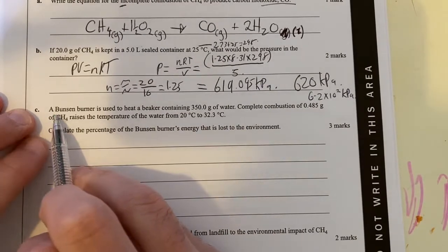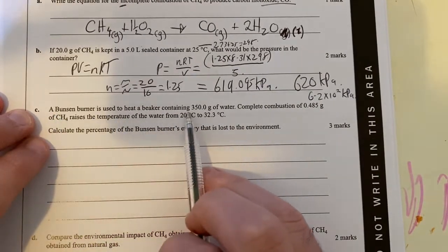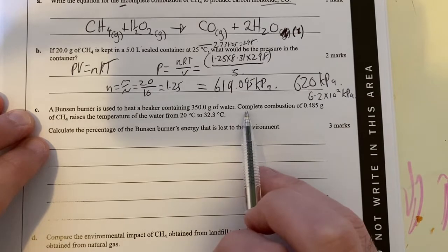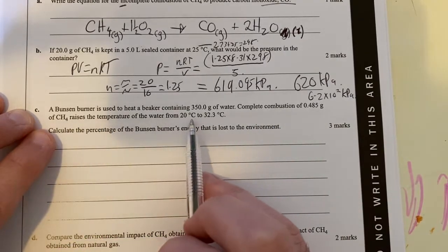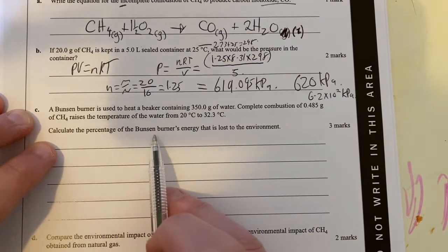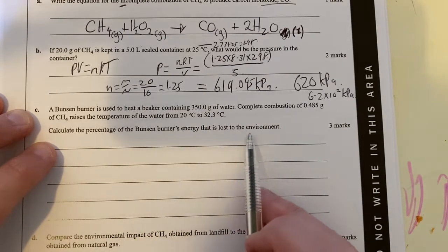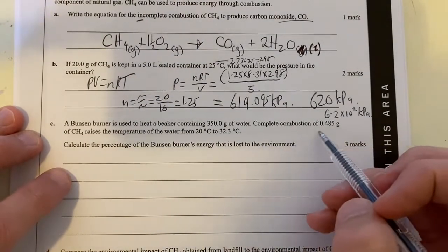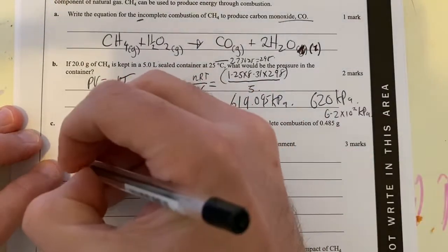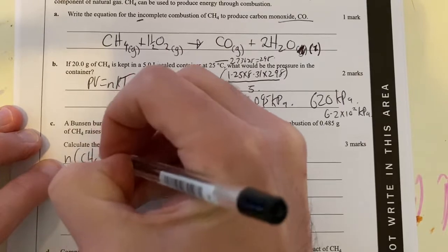Moving on to C, a Bunsen burner is used to heat a beaker containing that much water. Complete combustion of this much methane raises the temperature by that much. Calculate the percentage of the Bunsen burner's energy lost to the environment. All right, so how much energy has been lost? Well, how much energy was produced in the first place? So let's work out how much energy there was in this methane.